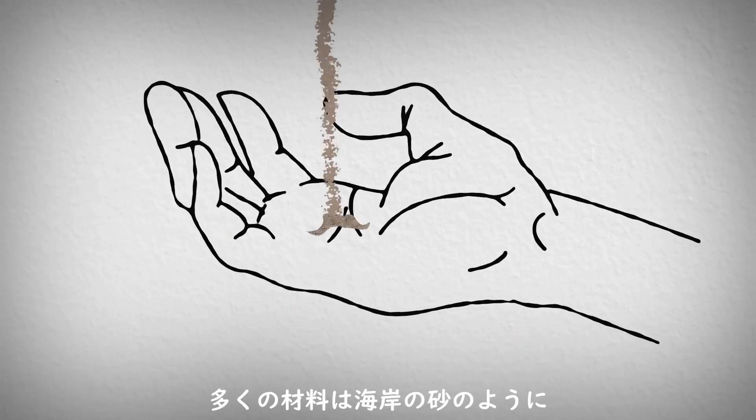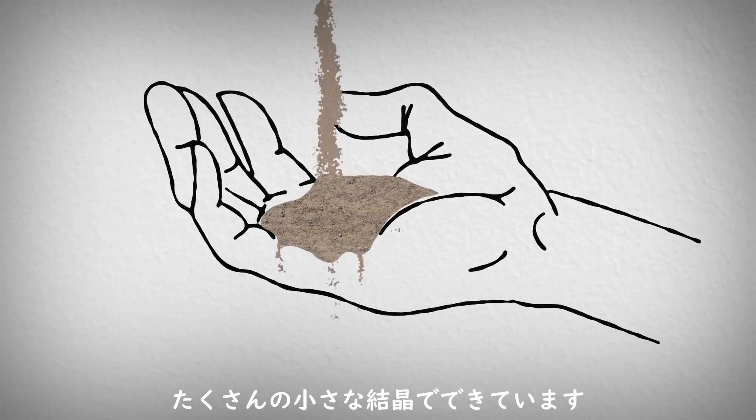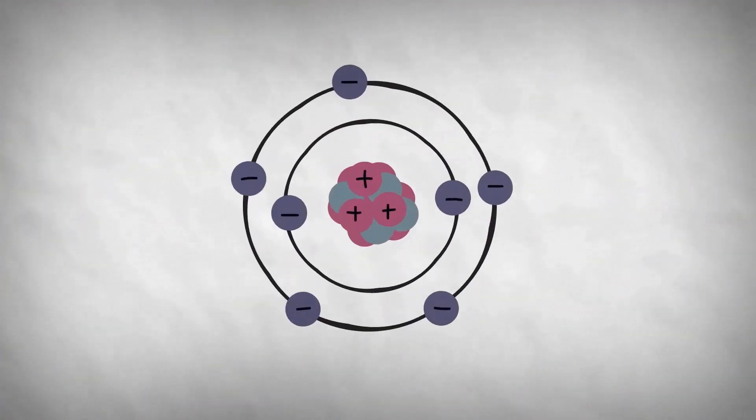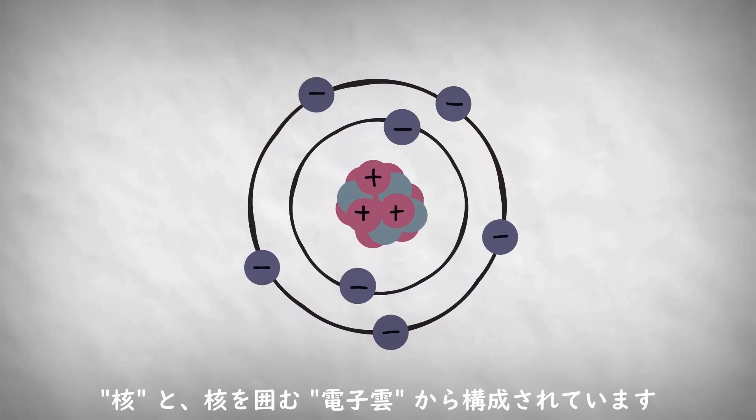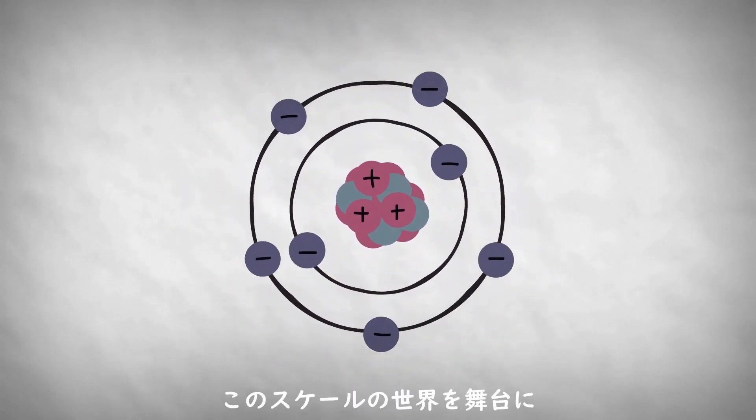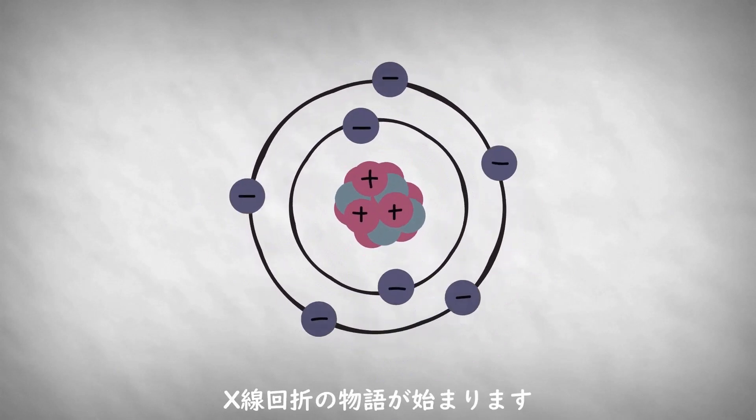Most materials are made up of many small crystals, like sand on a beach. Each of these crystals is composed of a regular arrangement of atoms, and each atom is composed of a nucleus surrounded by a cloud of electrons. It's at this scale that the story of X-ray diffraction begins.